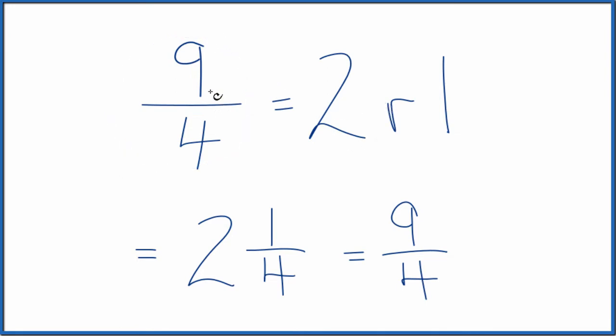So the fraction nine fourths equals the mixed number two and one fourth, sometimes called two and a quarter.